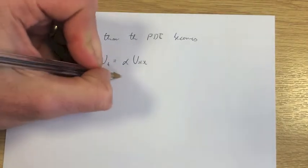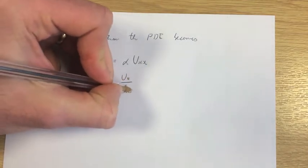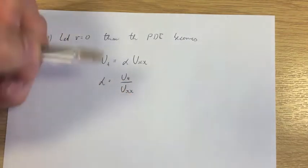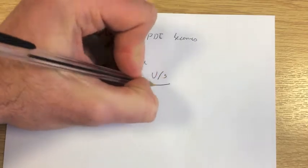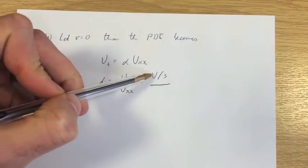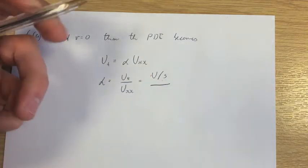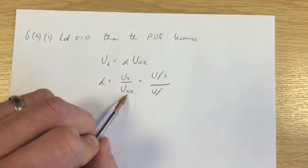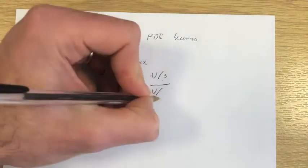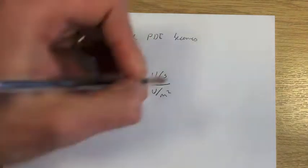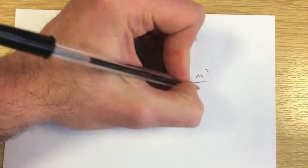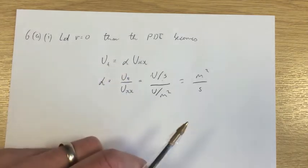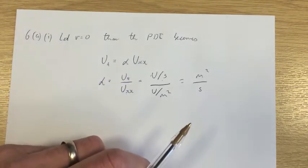What I'm going to do here is rearrange to make alpha the subject. So we have the derivative of U with respect to T over the double derivative of U with respect to X. Looking at units: time is in seconds, so we're finding a change in U over a second, and we're finding a change in U over meters and again over meters — so that's over meters squared. If we cancel out, we get meters squared per second. This is the unit for alpha, which is actually the diffusivity coefficient.